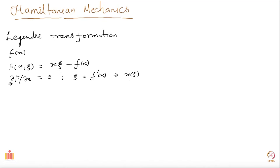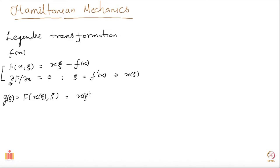You take this x which is now expressed in terms of xi and put it back into capital F. So you will get F as a function of xi only, and this new quantity which is only a function of xi I call g(xi). This is what is called a Legendre transformation. So you have gone from the function f(x) to a new function g(xi) through this transformation. It is x(xi)·xi minus f(x(xi)), and that is how the Legendre transformation is defined.